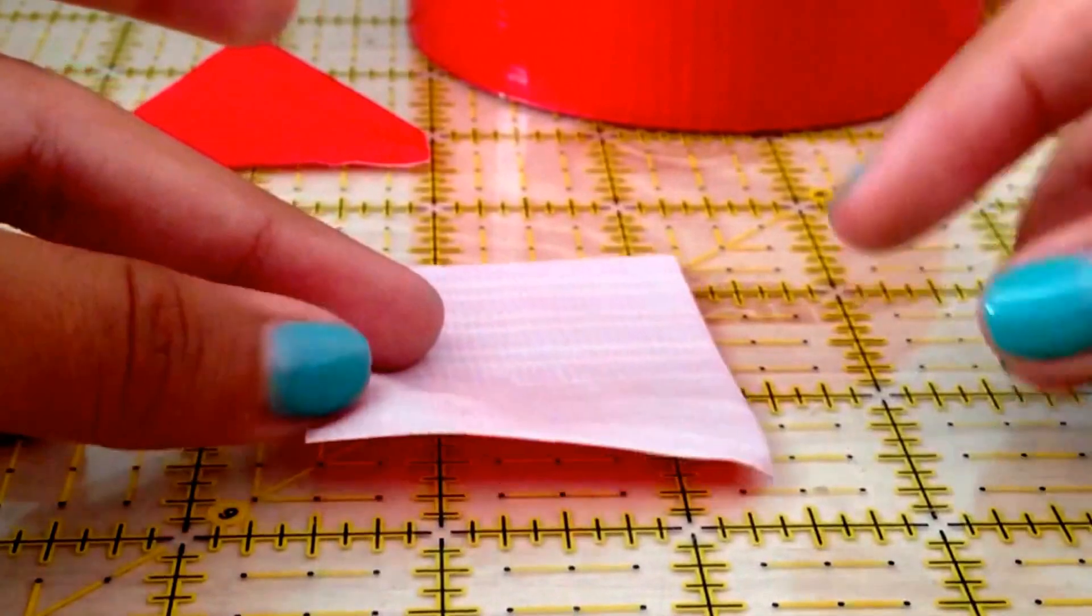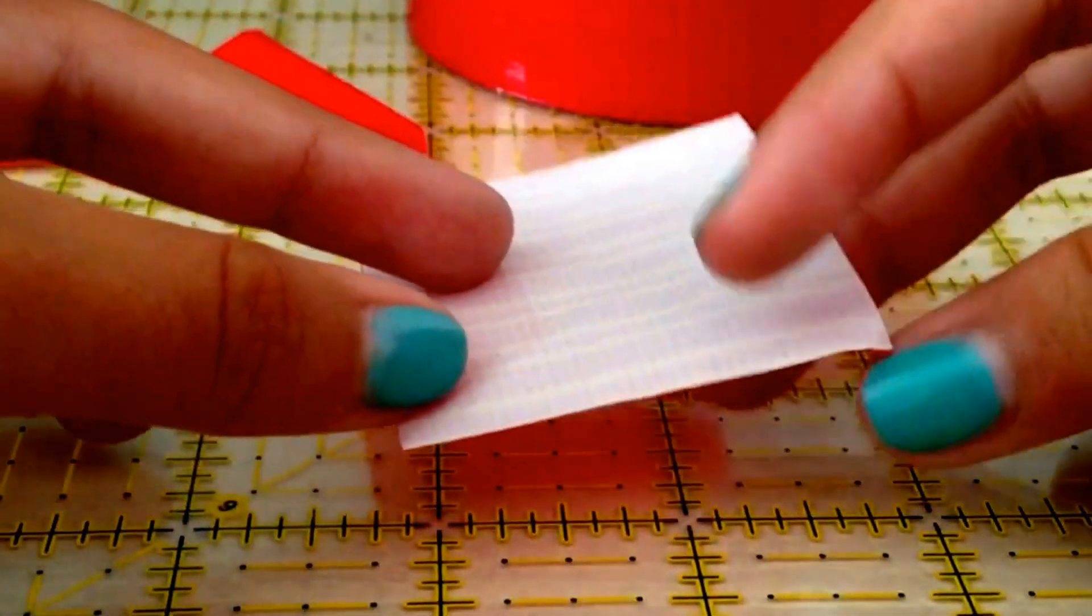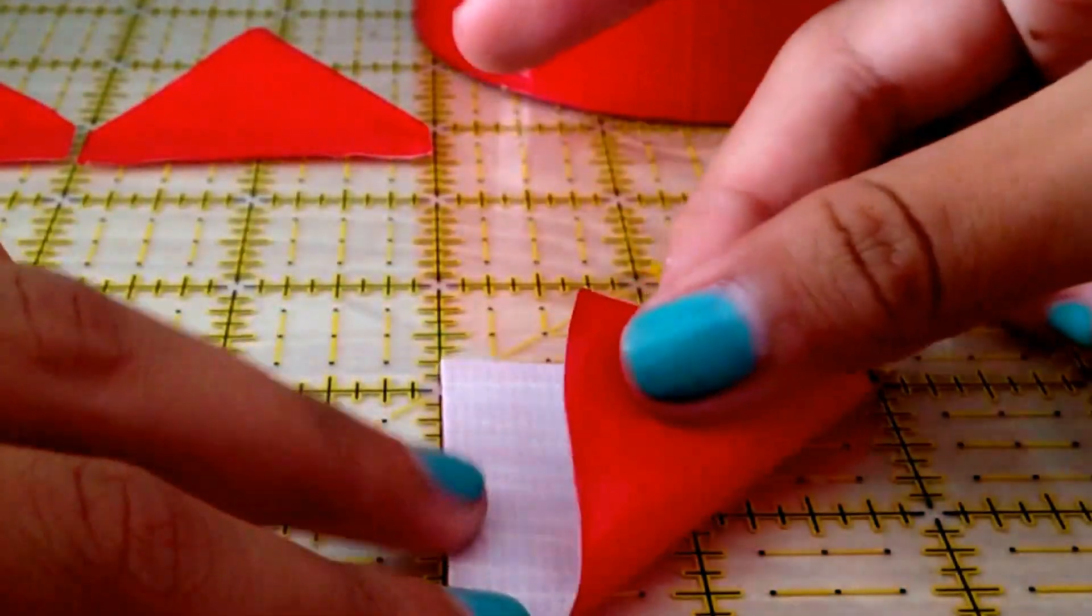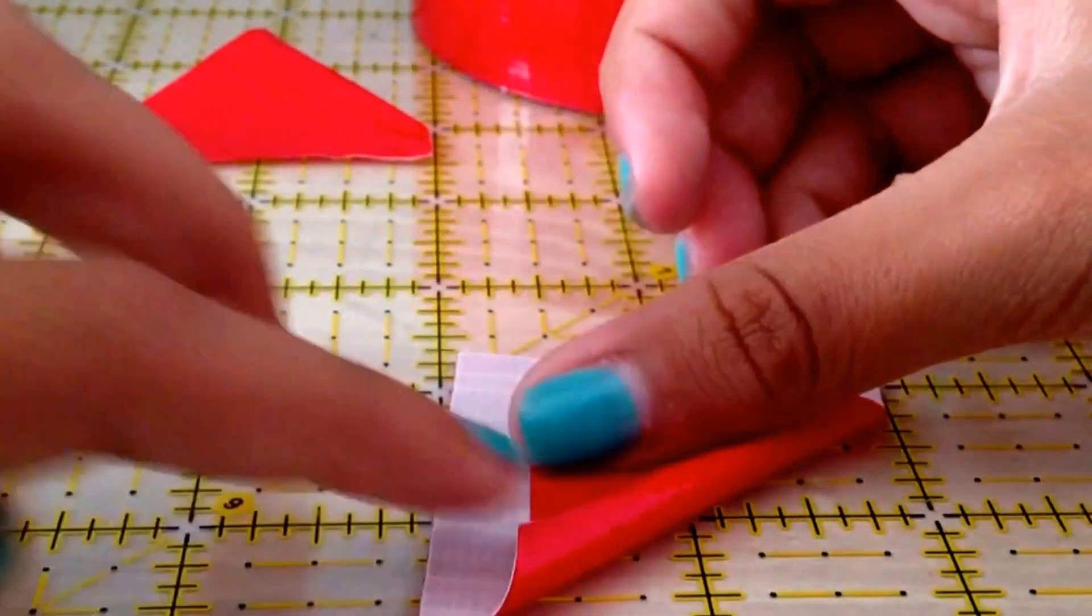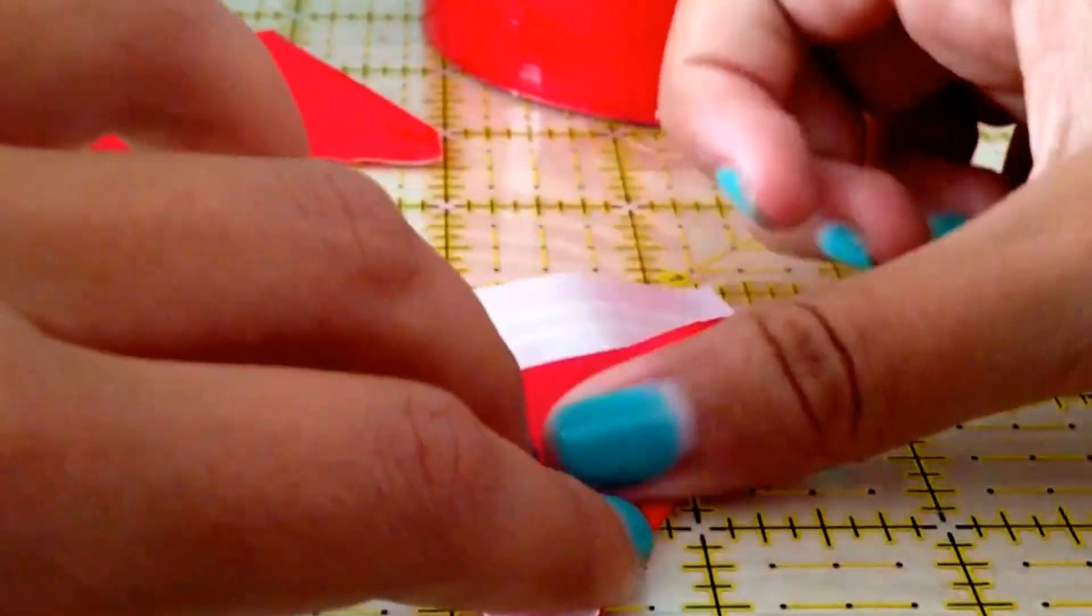Now, take another two inch strip and do the same thing, fold one side over but leave some stickiness like this.